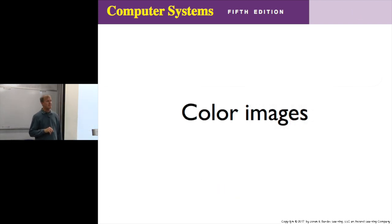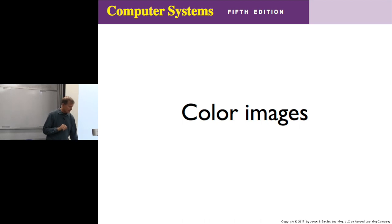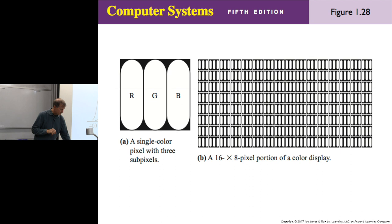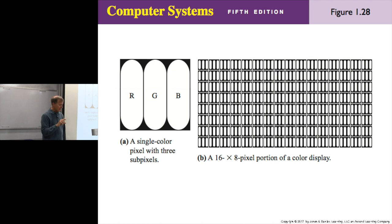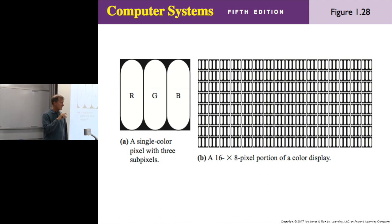What about color? How do we store color? It's the same idea, but each little pixel on your screen is subdivided into red, green, and blue — RGB. In figure 1.28a is a single color pixel with three subpixels. Instead of having a single pixel with a shade of gray, we have a value for red, a value for green, and a value for blue for each pixel.